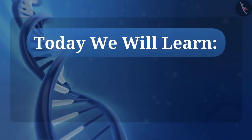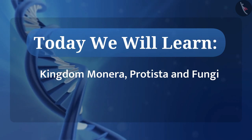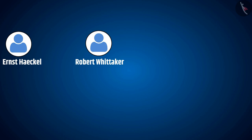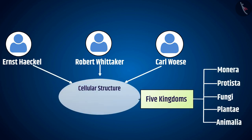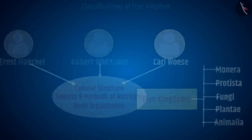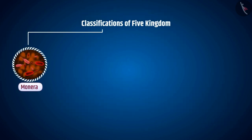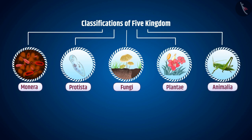Today we will learn about Kingdom Monera, Protista and Fungi. Scientists Ernest Haeckel, Robert Whittaker and Carl Woese divided all living organisms into five kingdoms based on cellular structure, sources and methods of nutrition and body organization. These are the five kingdoms: Monera, Protista, Fungi, Plantae and Animalia.